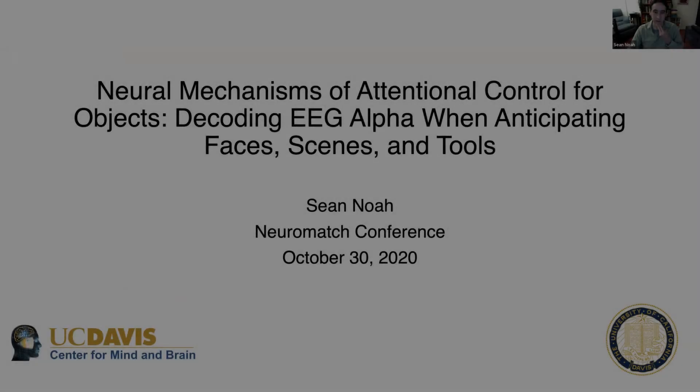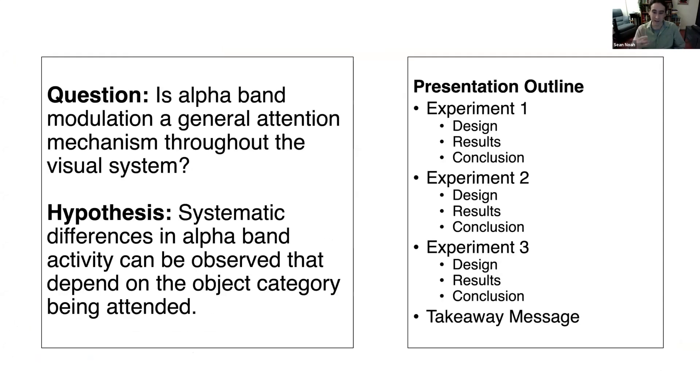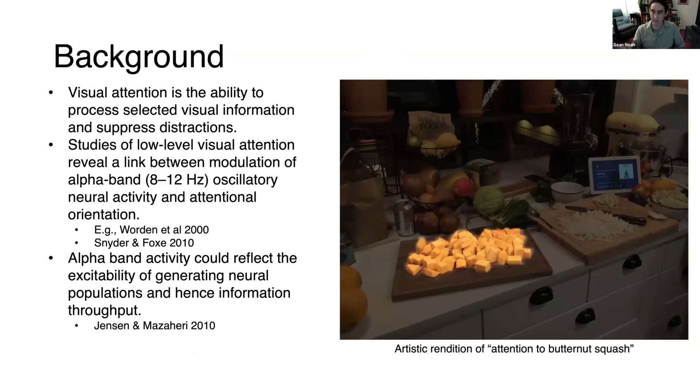My advisor is Ron Mangan, and in the Mangan lab we study the neural mechanisms of attention—how attention is implemented in the brain. We think of attention as the cognitive ability that enables the selective processing of task-relevant information and the suppression of task-irrelevant or distracting information. We're interested in both the orienting process of attention and the mechanisms of enhancement themselves.